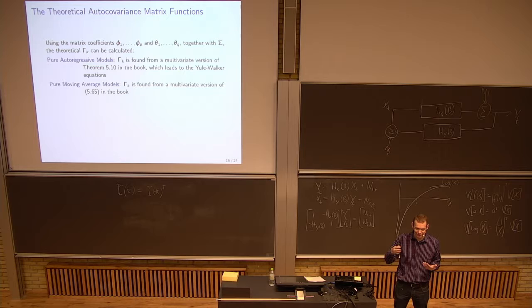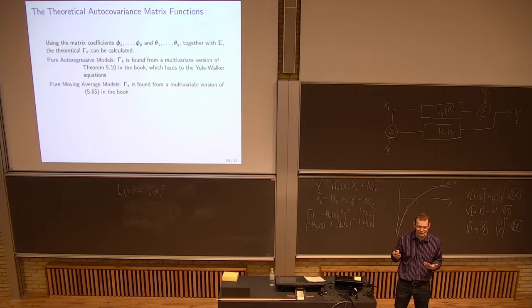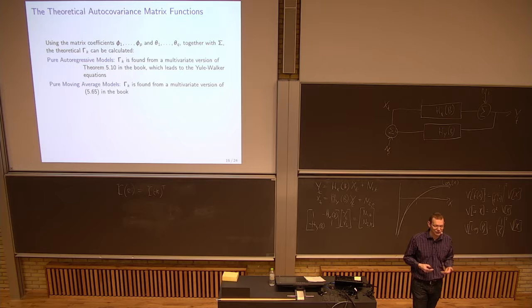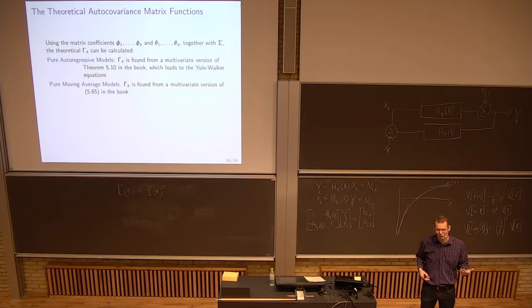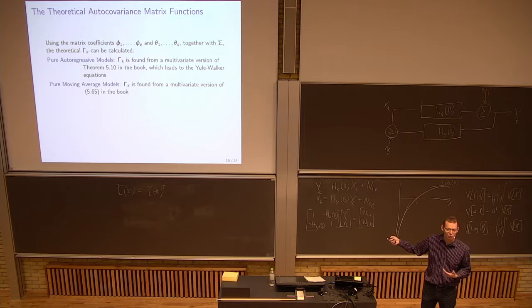What do you expect if you have an AR1 model? How should these coefficients evolve? If it was order 1, then the autocorrelation function should be exponentially decaying. Similarly, from the multivariate case, it's the exponential decay that you're looking for.